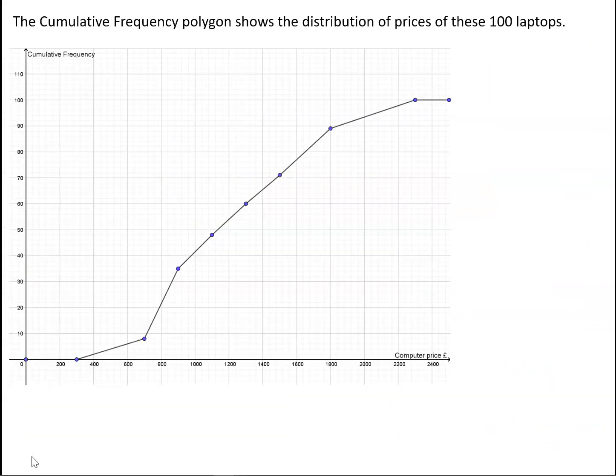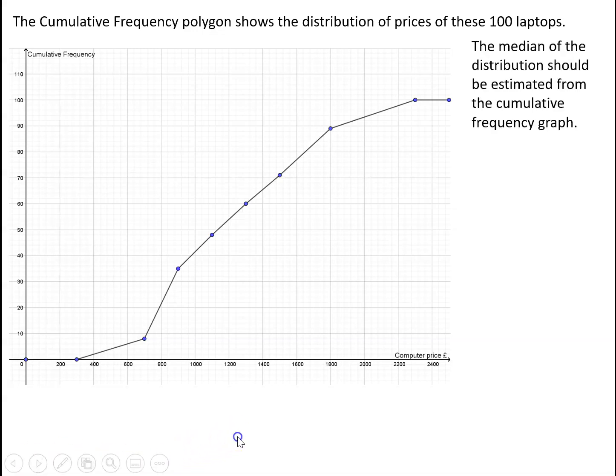The median can be estimated from this cumulative frequency graph. We take half of the total number of observations, which is half of 100, which is 50. We draw a horizontal line from 50 on the cumulative frequency axis until we meet the graph, go straight down, and that gives us our estimate of the median, which is around £1,125.